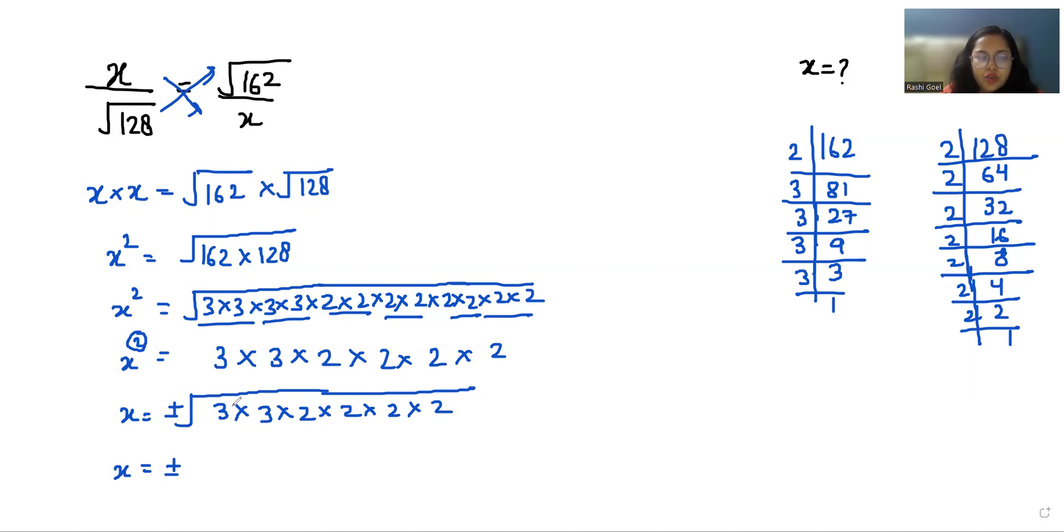x is equal to plus minus. To remove this square root we can write the pair once, 3 times 2 times 2, so the value of x is plus minus 12. I hope it's clear and you find it useful.